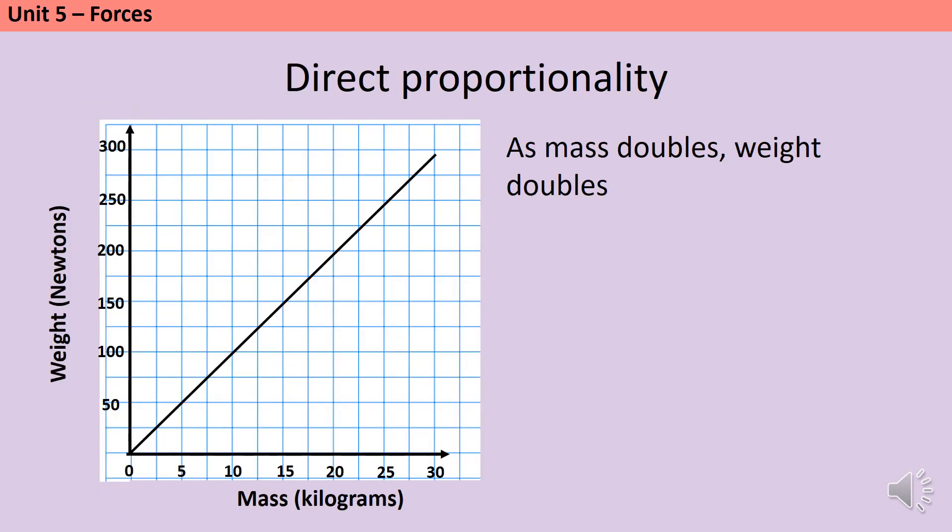In fact, we can go slightly further than just saying the bigger the mass, the bigger the weight. We can actually describe these two quantities as being directly proportional. So, that means that if I double the mass, I double the weight. If I triple the mass, I triple the weight. And I can identify this from a graph, because it has a constant gradient, or constant steepness, and also because it passes through the origin, that zero, zero point.